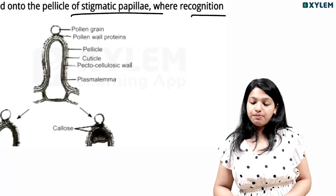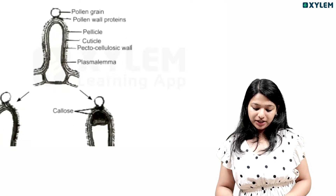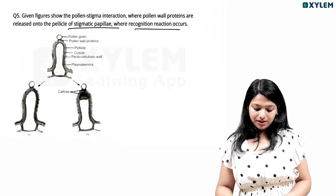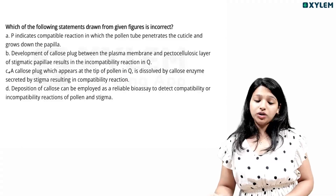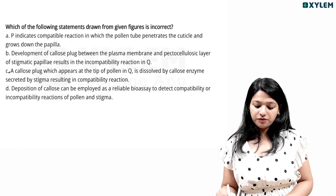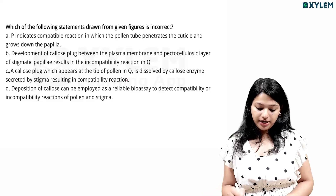Labels in the figure: pollen grain, pollen-walled protein, pellicle, cuticle, pectocellulose, plasma lemma. Which statement drawn from the given figure is incorrect?